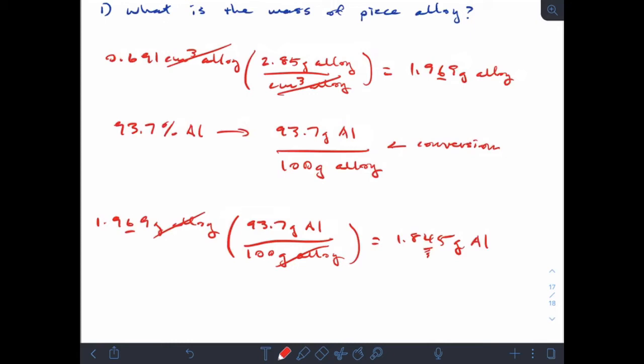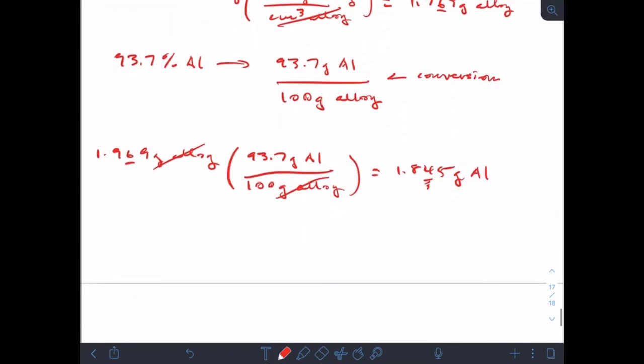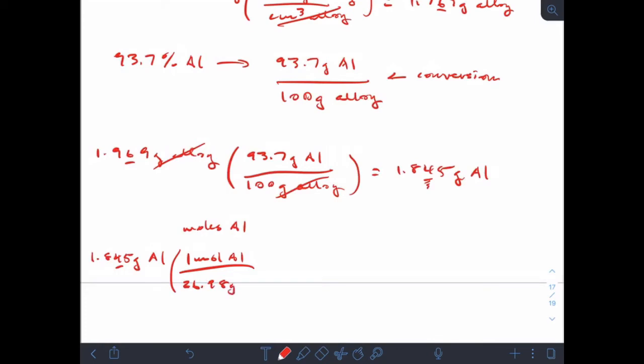I'm almost there. Now that I know grams of aluminum, I can get to moles of aluminum, then to moles of hydrogen. I'm going to do this in one straight step all the way to grams of hydrogen. So 1.845 grams of aluminum, tracking at the third sig fig. My first step is to go to moles. I find that on the periodic table as one mole of aluminum is 26.98 grams of aluminum.